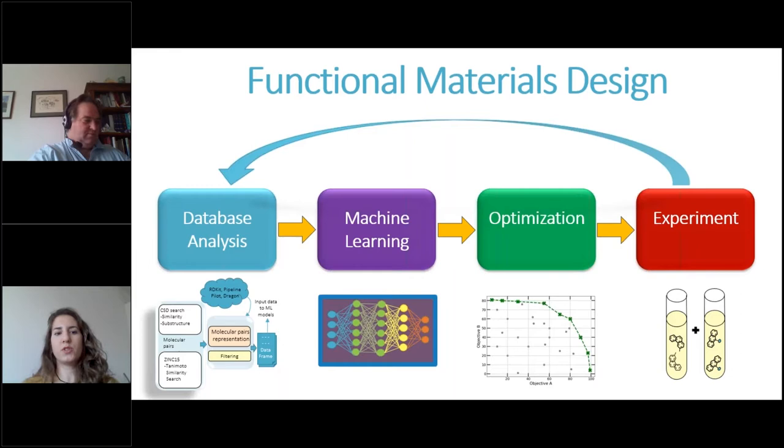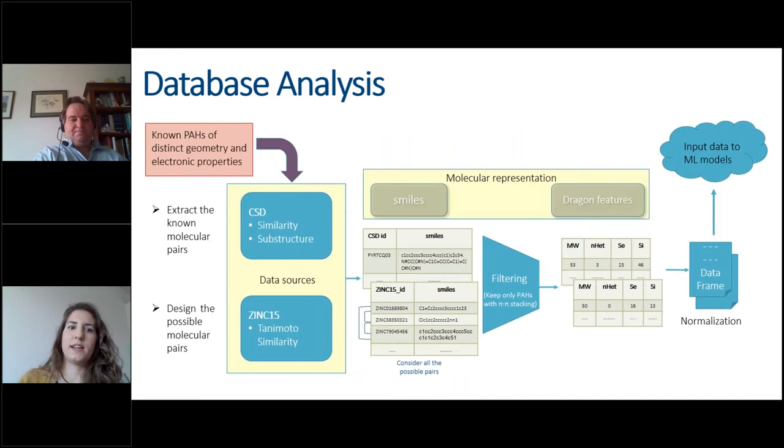My project can be basically separated into four different parts. The first part is database analysis. Then the machine learning part. Then when we have some predictions, we want to find the optimal combinations to use for the lab. And then we go to the lab and try these optimal combinations. So I'm going to talk in more detail for each of these parts during my talk.